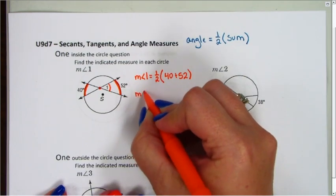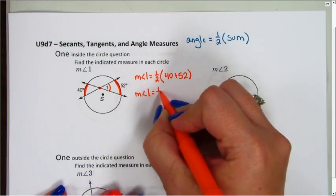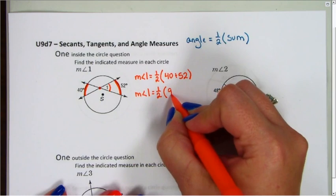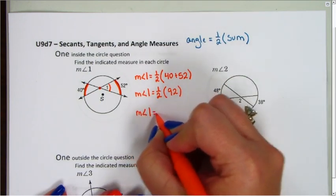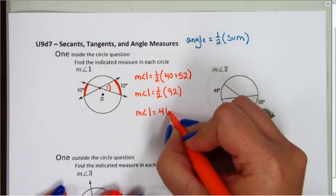So the measure of angle 1 is going to equal one-half of 92. So the measure of angle 1 is going to equal 46 degrees.